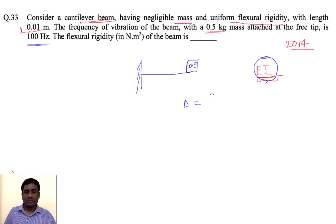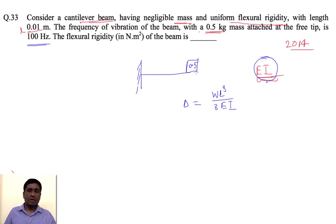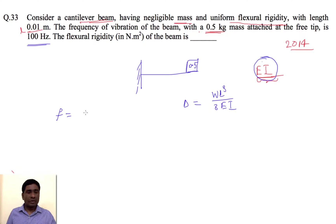The deflection for a cantilever beam with a point load at the end is delta = WL³ / 3EI. The natural frequency is given by f = ωn / 2π, and ωn = √(g / δ).